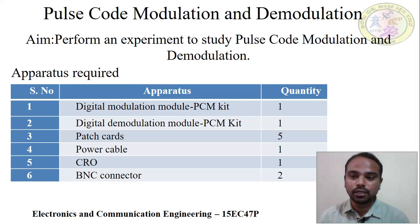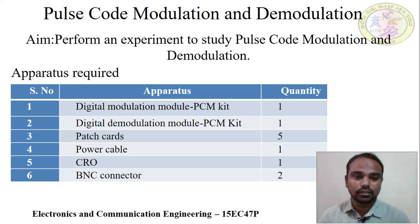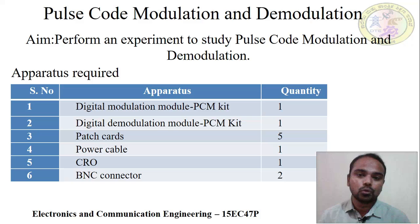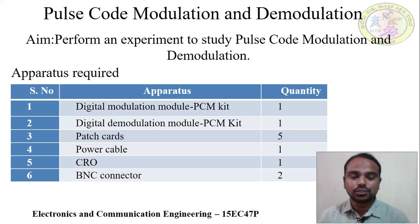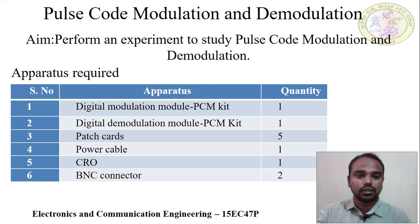For this experiment we require six components. First is a digital modulation module, that is the PCM kit — pulse code modulation and demodulation kit. We also need five patch cards, one power cable, one CRO, and two BNC connectors. Patch cards are used to connect within the module, the power cable provides power supply, the CRO is used to observe the waveform, and the BNC connectors are used to connect the kit to the CRO.